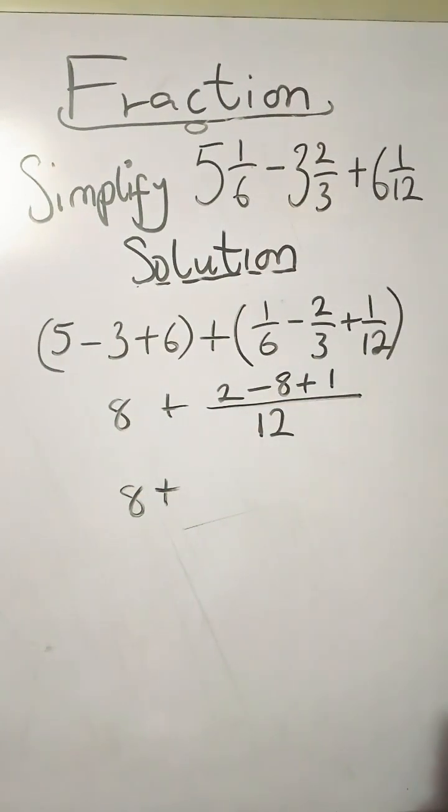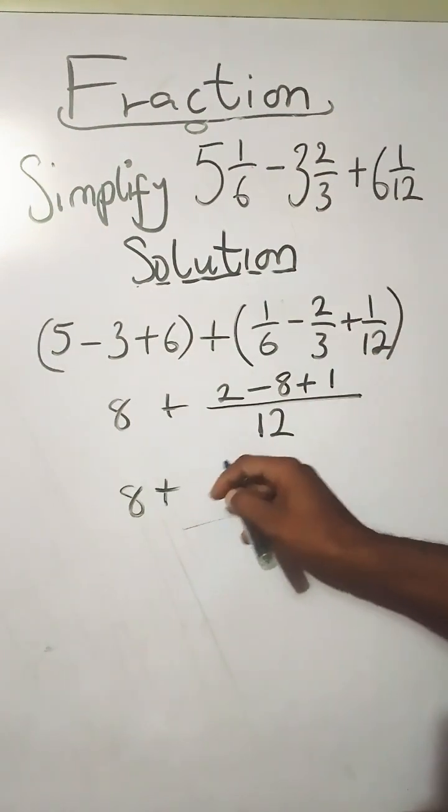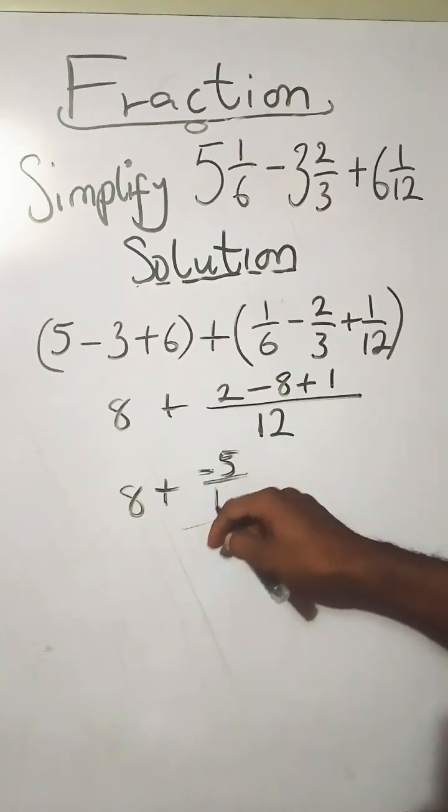Now move on. You have 8 plus 2 minus 8 gives you minus 6, plus 1 gives you minus 5 over 12.